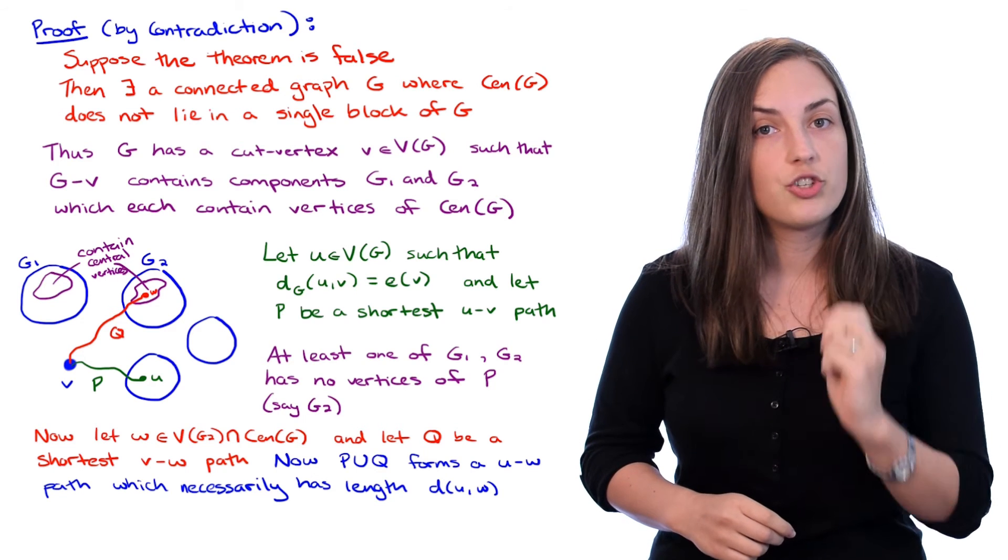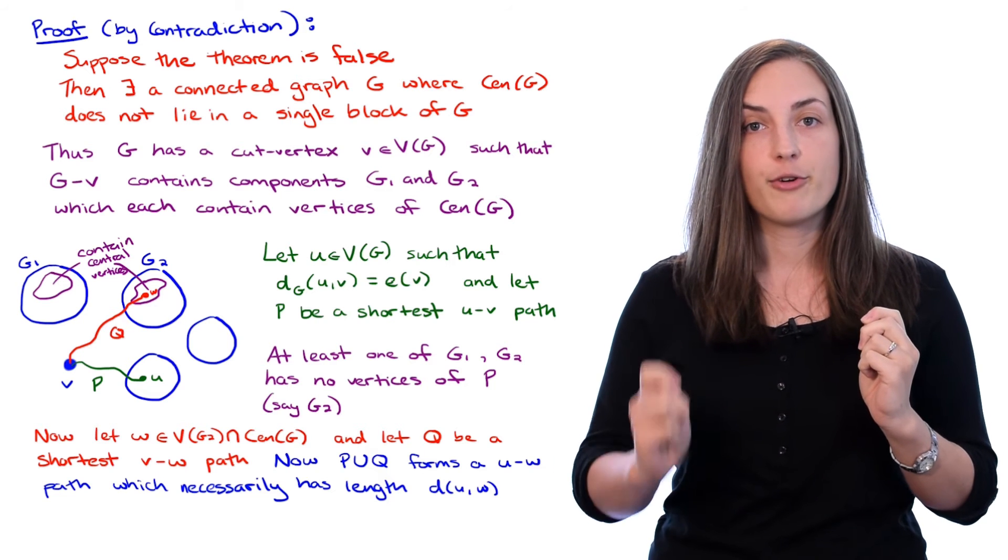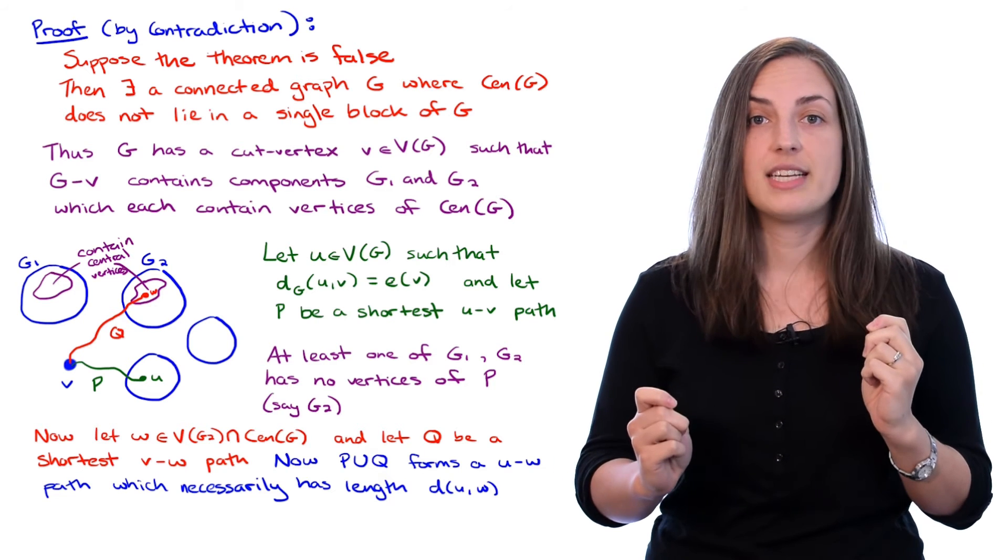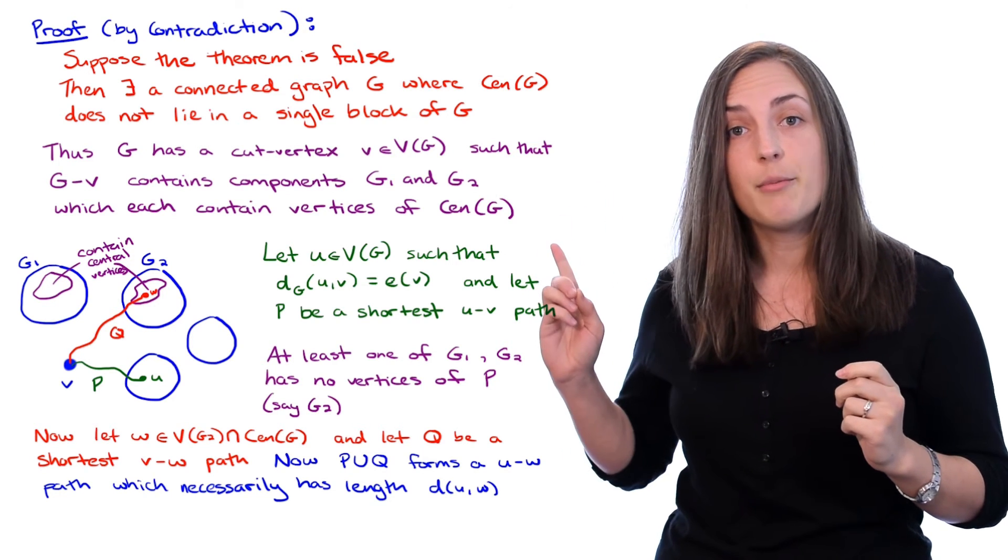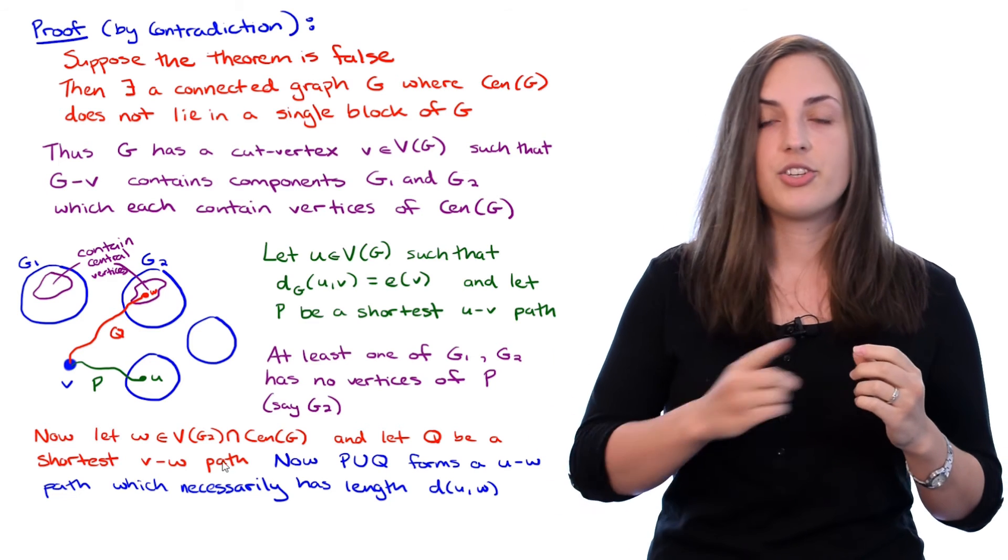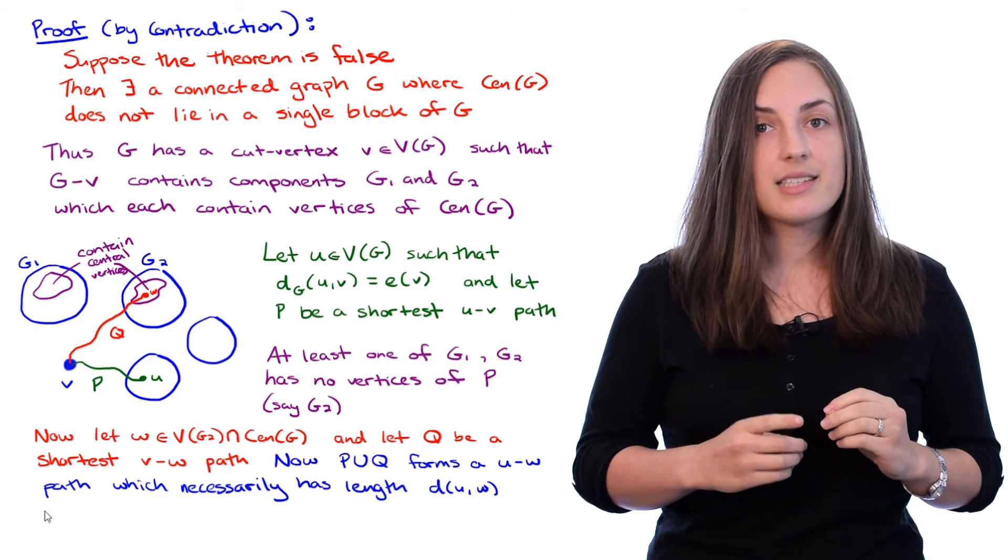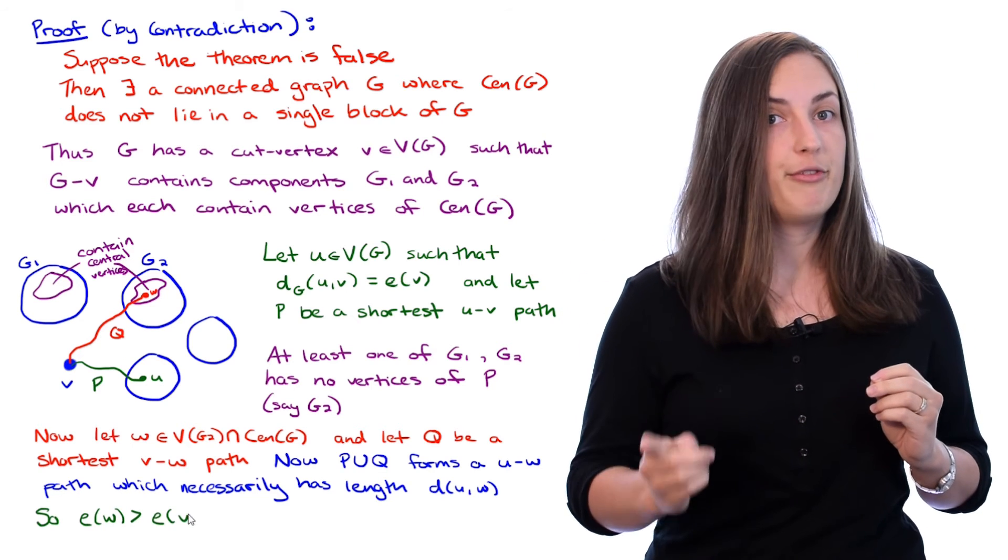were individually shortest paths and U and W belong to different components of G without V. Remember that U was chosen to be a vertex at maximum distance from vertex V at eccentricity of V. But clearly the shortest path from W to U is larger than the path from V to U. That means that the eccentricity of W is larger than the eccentricity of V.